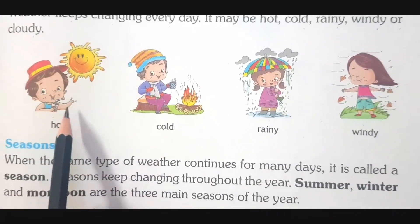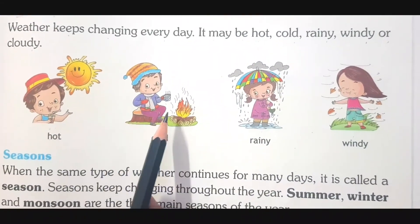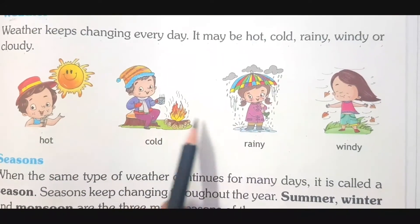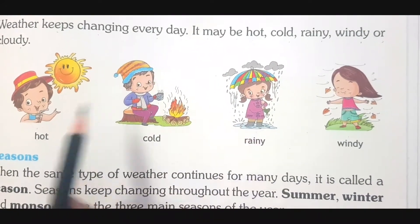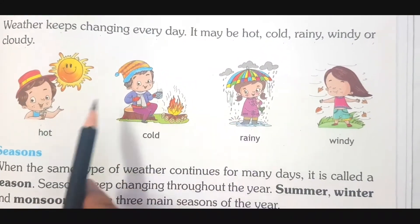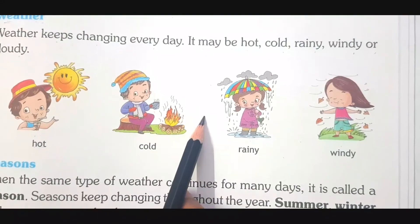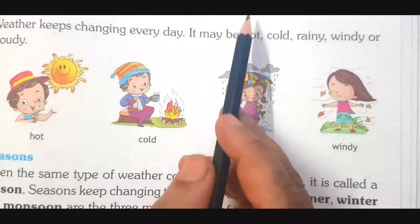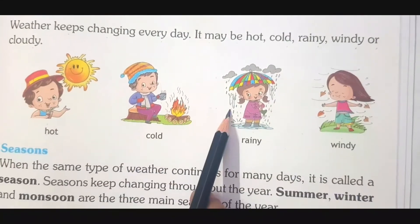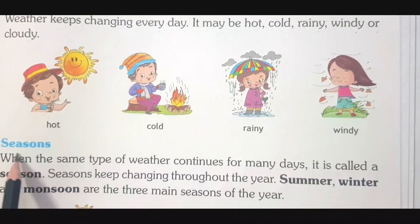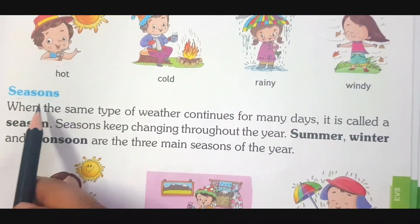Weather changes every day, so this is a natural change, children. It is not a human-made change — we cannot change the weather. Weather changes by itself, that is why it is a natural change. Phases of the moon is a natural change, weather is a natural change. One more natural change is seasons — let's read about it.